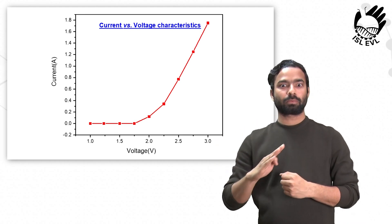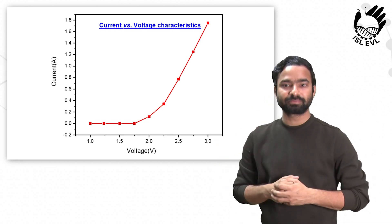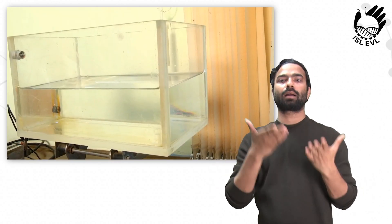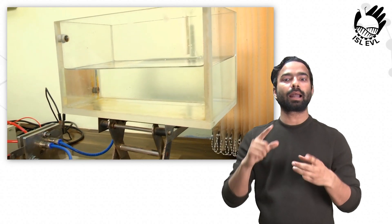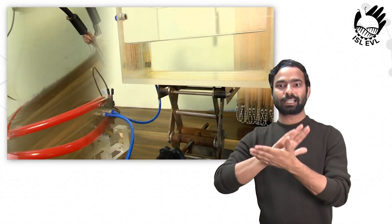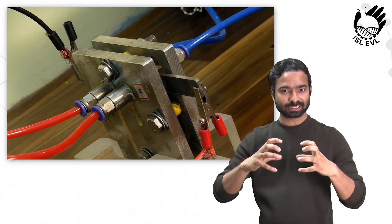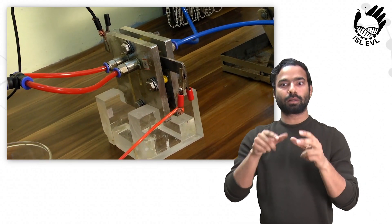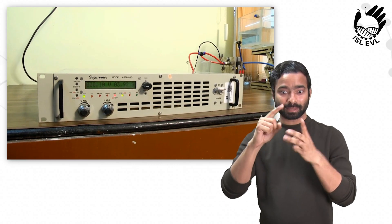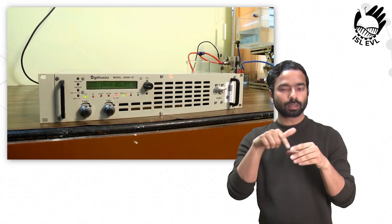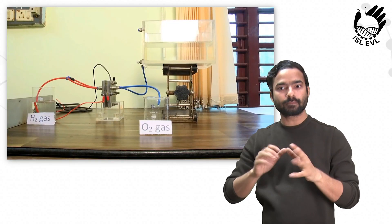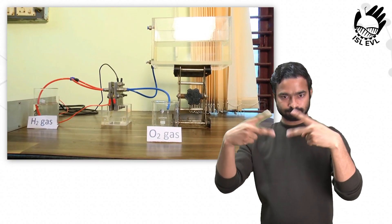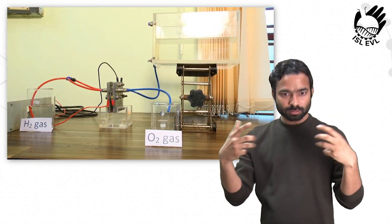We can apply this fundamental principle for the conception of proton exchange membrane based hydrogen generator. In the next set of experiments, we are going to demonstrate the generation of hydrogen and oxygen gas through proton exchange membrane based water electrolyzer. At first, we see here a single cell PEM electrolyzer configuration with inbuilt membrane electrode assembly, flow field, current collector, and end plates assembled together to make a single cell.